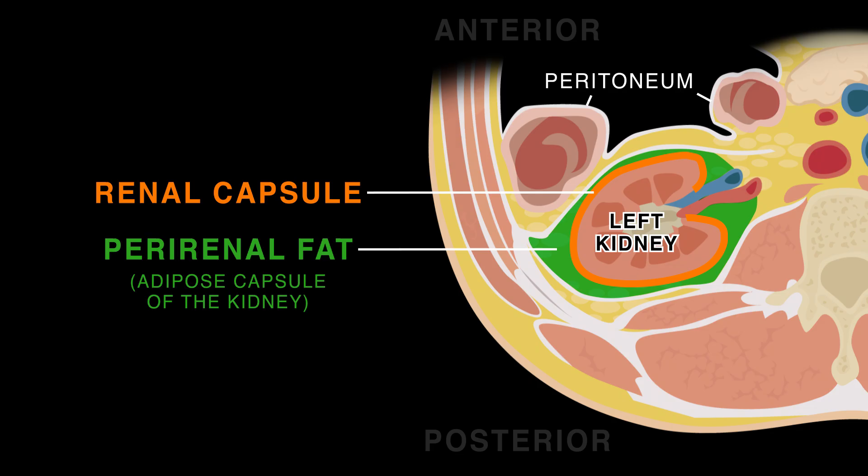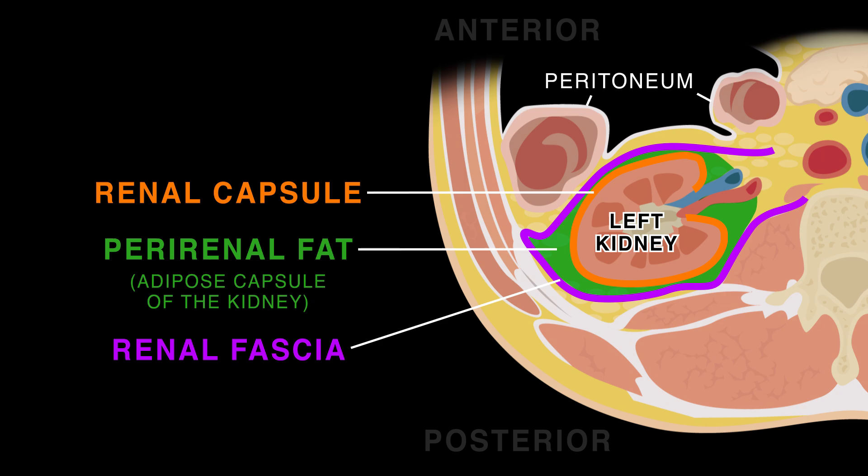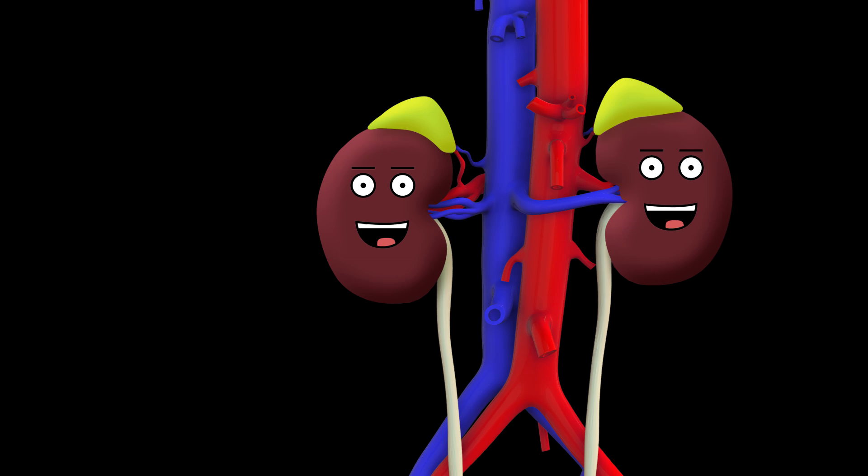Then the renal fascia, which encloses the kidneys and adrenal glands. And the parirenal fat behind us, remember for exams.